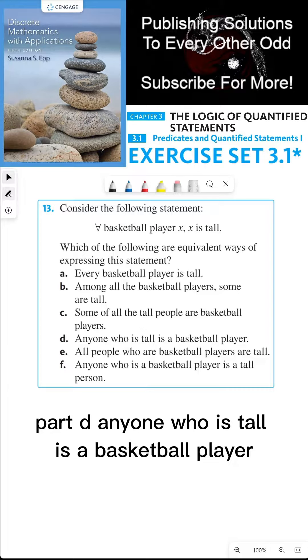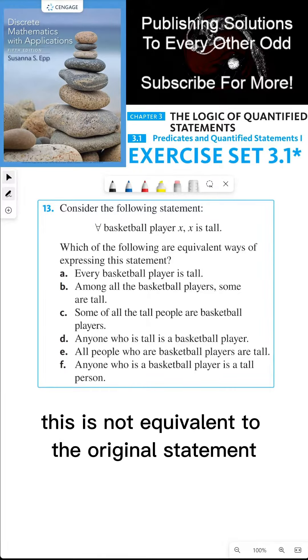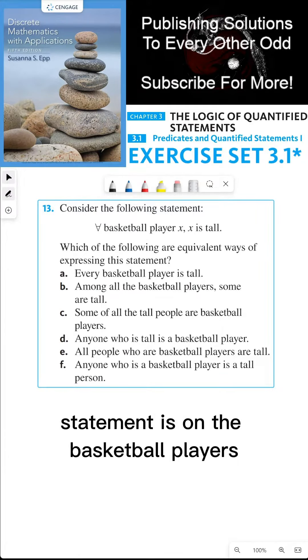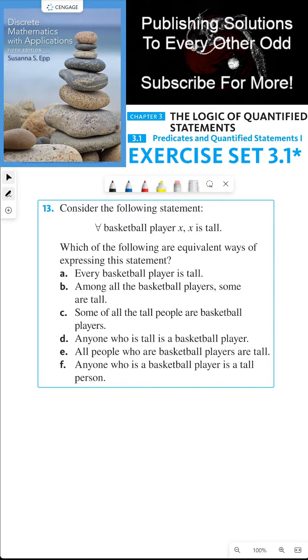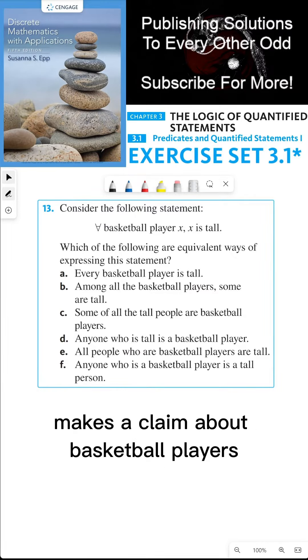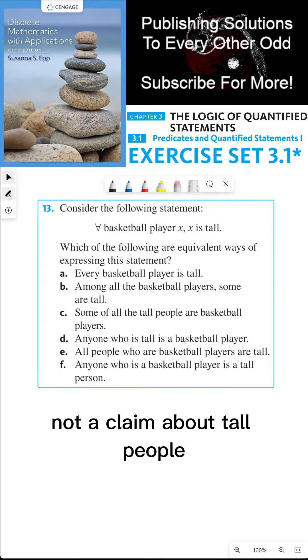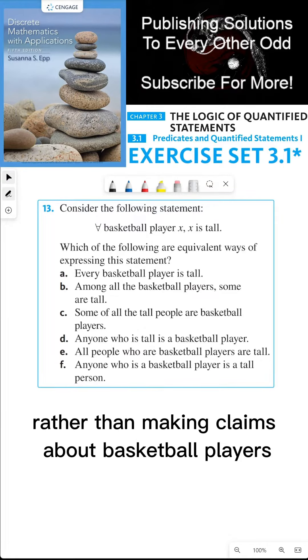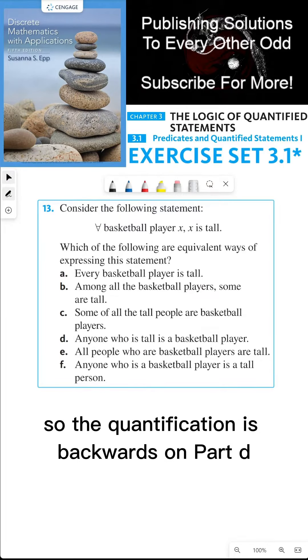Part d, anyone who is tall is a basketball player. This is not equivalent to the original statement because the quantification of the original statement is on the basketball players, not people who are tall. So the original statement makes a claim about basketball players, not a claim about tall people. Whereas part d makes a claim about tall people rather than making claims about basketball players. So the quantification is backwards on part d.